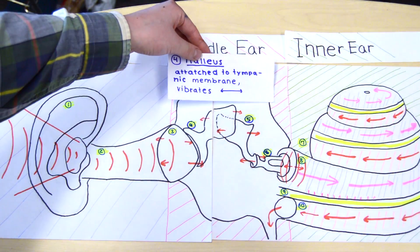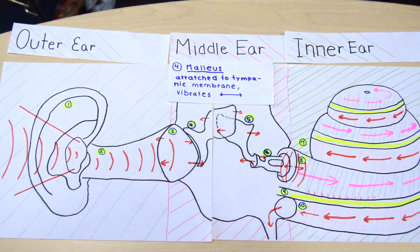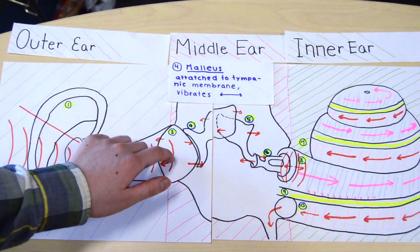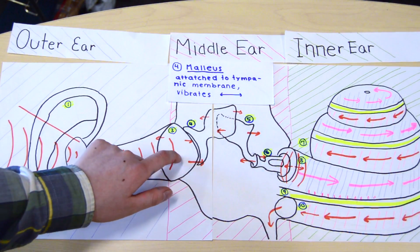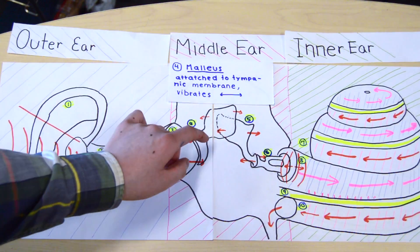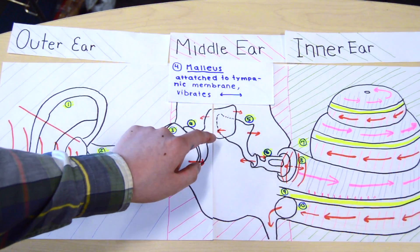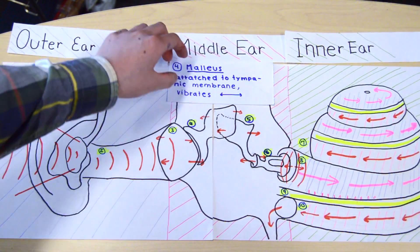The malleus is the first auditory ossicle, and it's attached to the tympanic membrane. As the tympanic membrane vibrates horizontally, in response the malleus also vibrates horizontally.